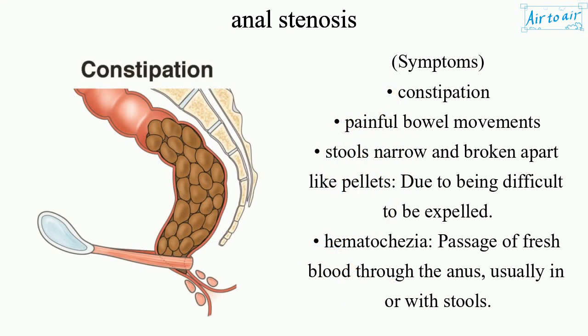Symptoms include constipation, painful bowel movements, and stools that are narrow and broken apart like pellets due to being difficult to expel. Hematochesia — the passage of fresh blood through the anus, usually in or with stools — is also a symptom.